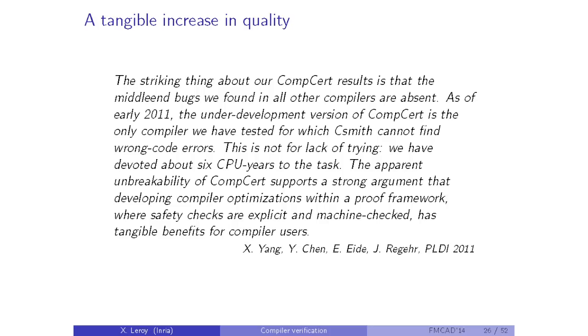Recall the University of Utah study that found bugs in all compilers — they also tested CompCert and threw about six CPU-years of random testing at finding a bug in the code generation and optimization algorithms, and didn't find any. To be entirely honest, they did find some bugs in the unverified front-end part — basically misunderstandings on my side of the C specification. So random testing remains very useful even for formally verified systems.